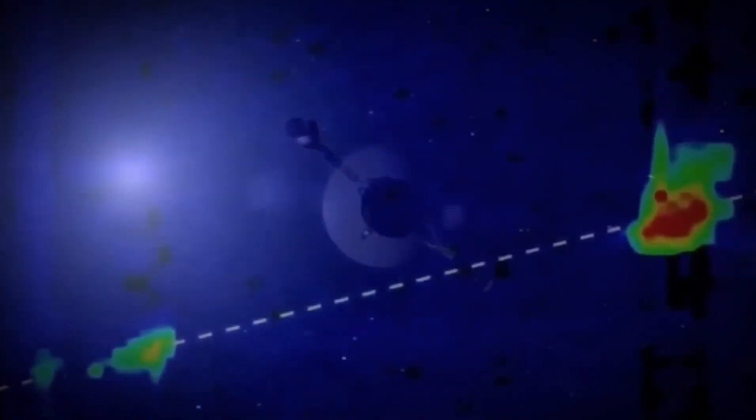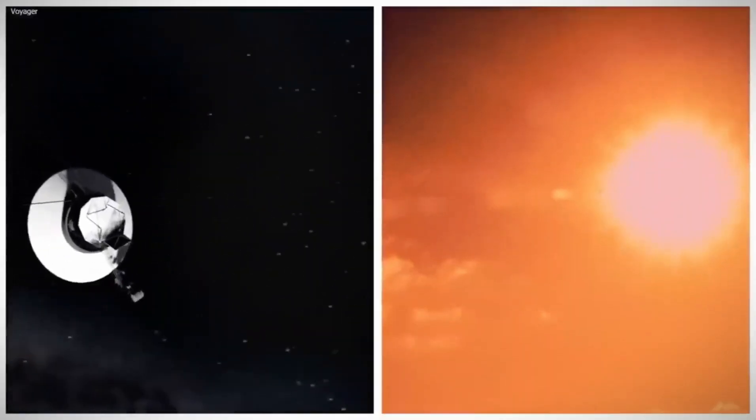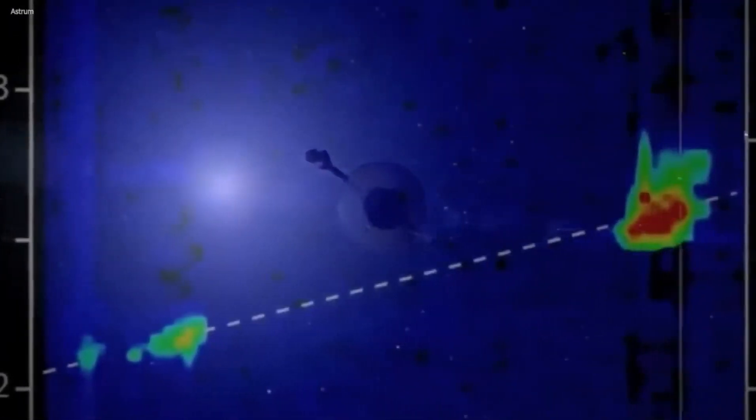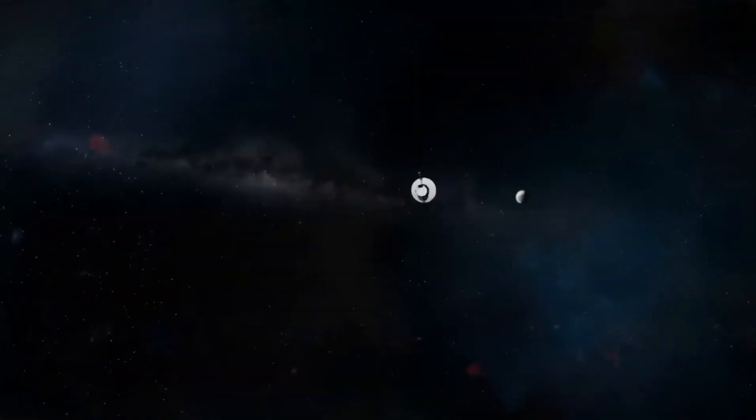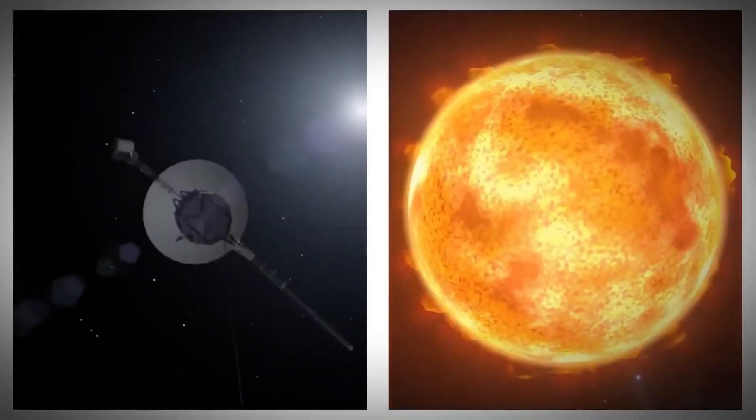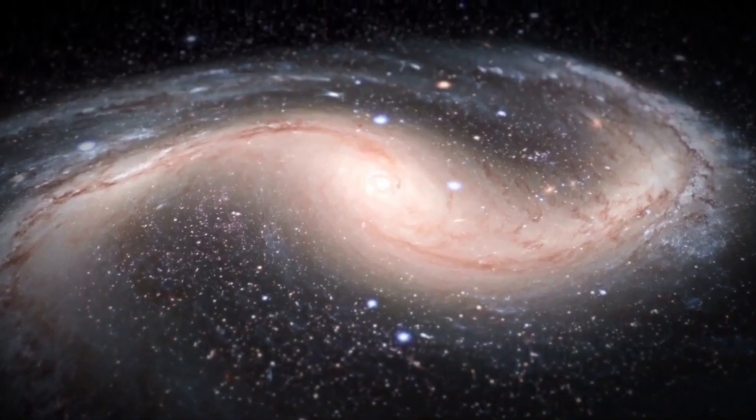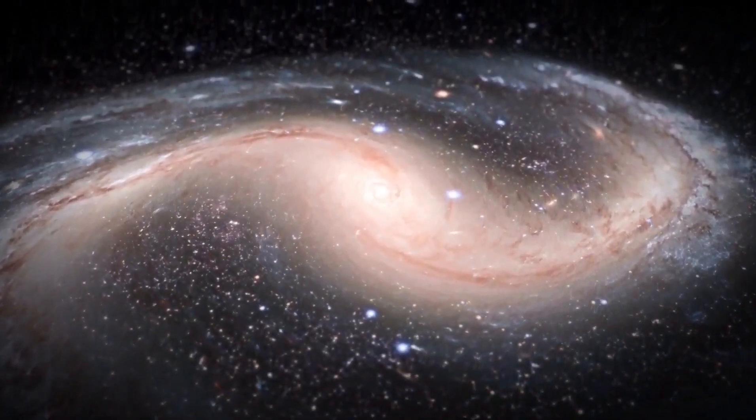The stark reality is that without intervention, Voyager 1's functionality will be severely limited. Additionally, the vast distance between Voyager 1 and Earth poses challenges, with signals taking over 21 hours to travel. Weak signals combined with interference and temperature extremes create obstacles to successful data transmission.